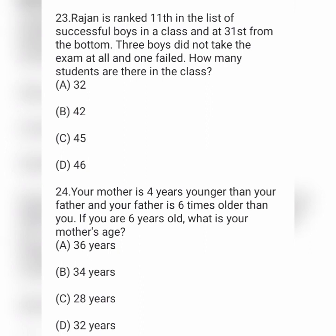Next question: your mother is 4 years younger than your father, and your father is 6 times older than you. If you are 6 years old, what is your mother's age? Option A is 36 years, option B is 34 years, option C is 28 years, and option D is 32 years.